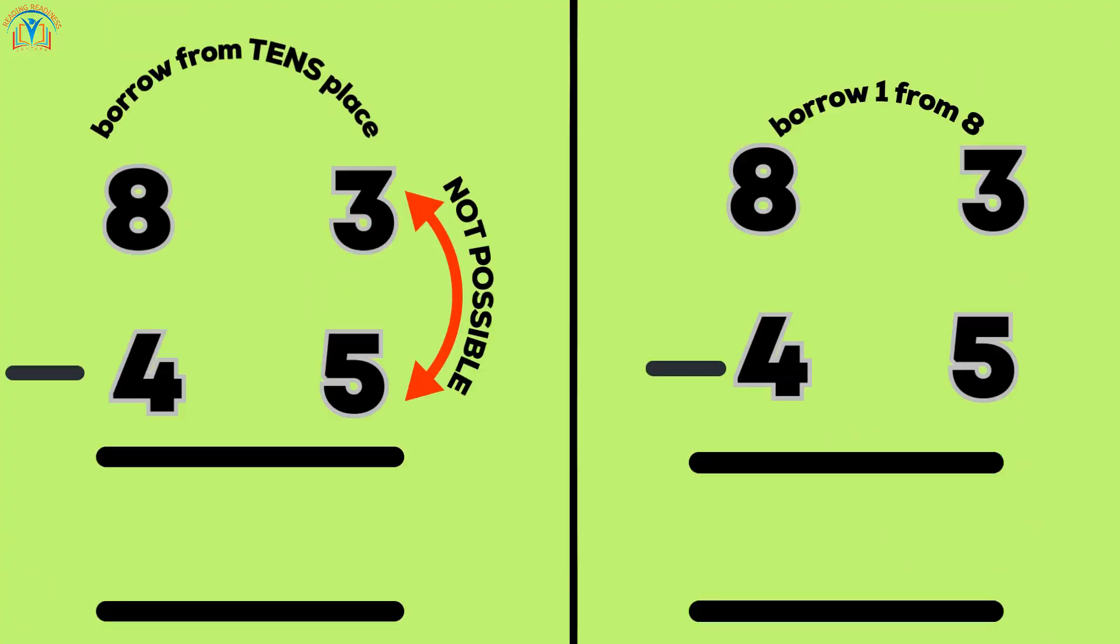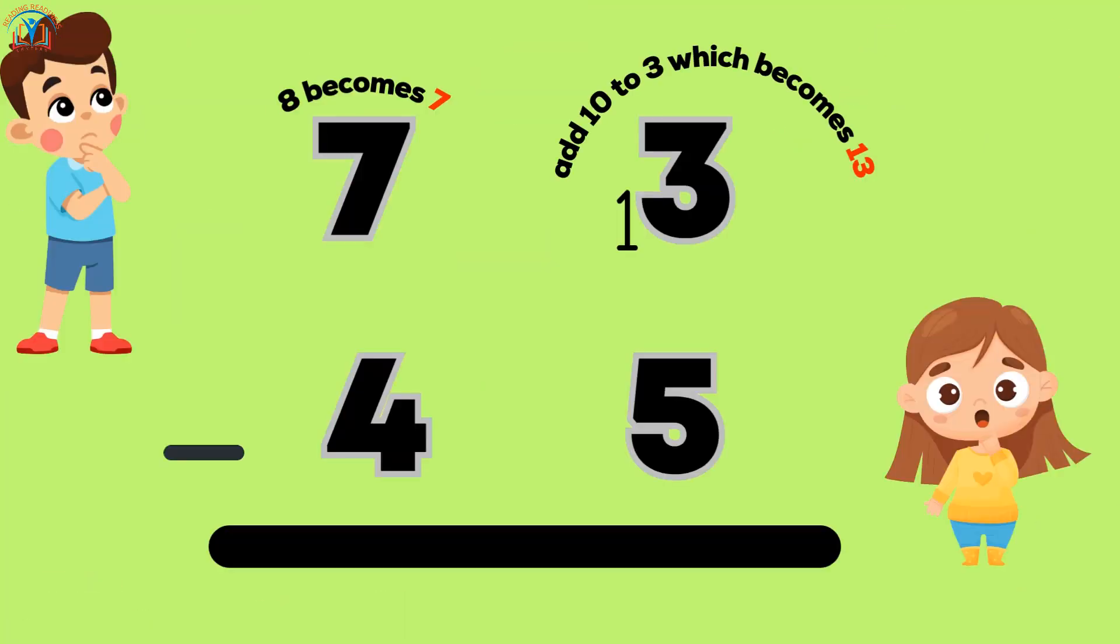3 minus 5 is not possible, so we need to borrow from the tens place. We borrow 1 from 8, which becomes 7, and add 10 to 3, which becomes 13.